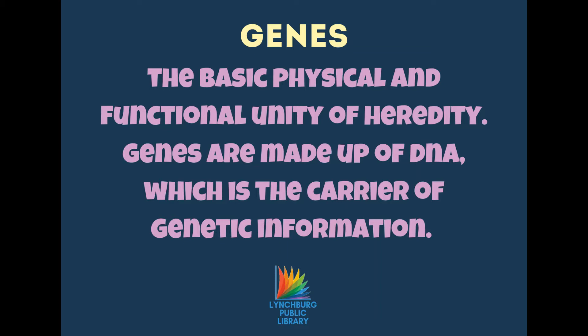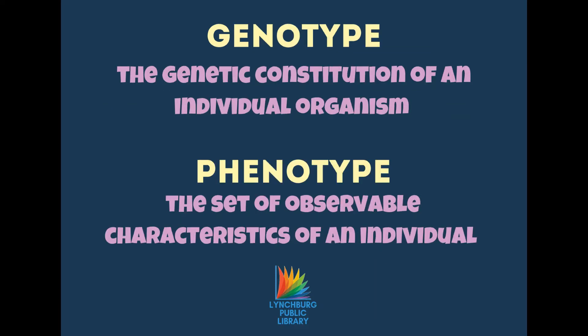Most genes are the same in all people, but a small number of genes — less than 1% of the total — are slightly different between people. The genotype is the genetic constitution of an individual organism. The phenotype is the set of observable characteristics of an individual resulting from the interaction of its genotype with the environment. In other words, the phenotype is the physical or visible expression of the genotype.